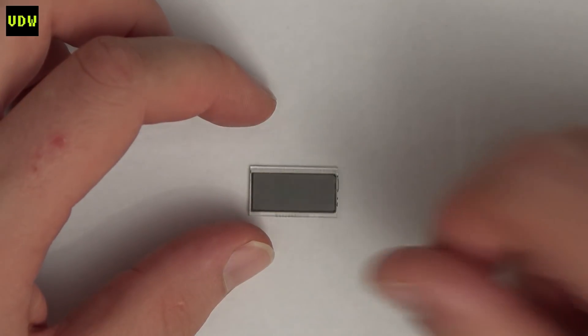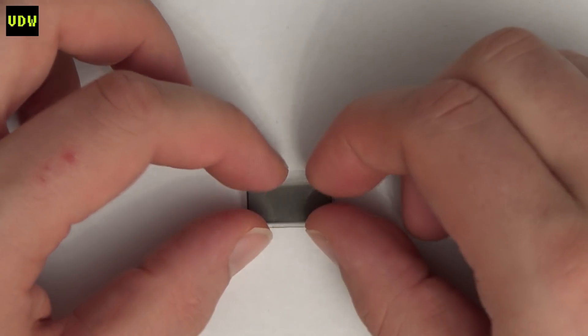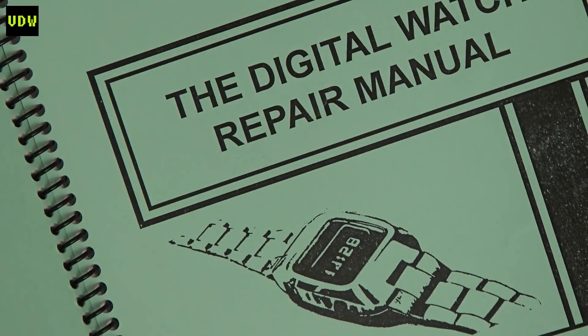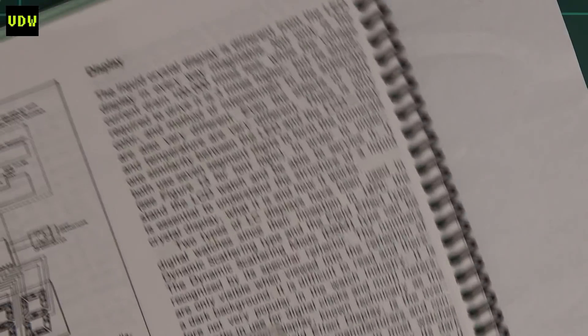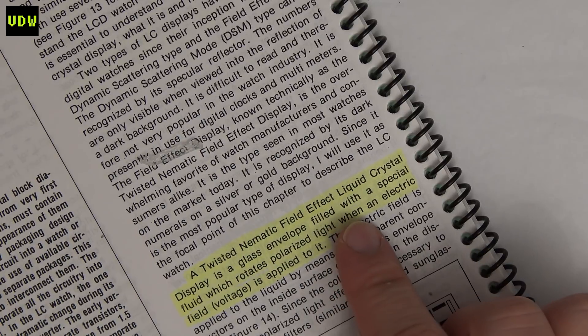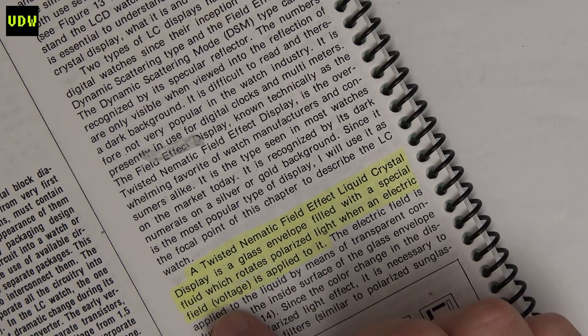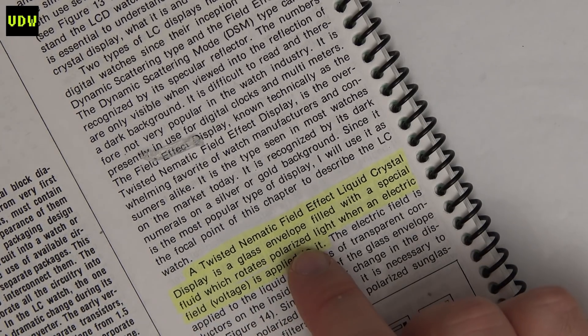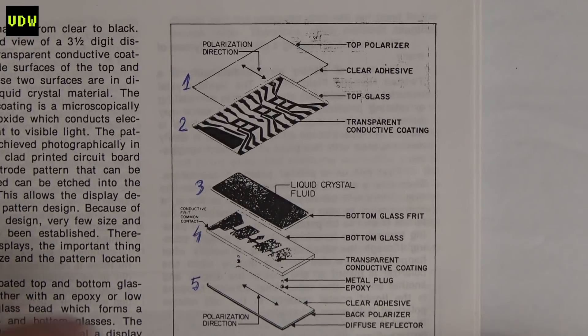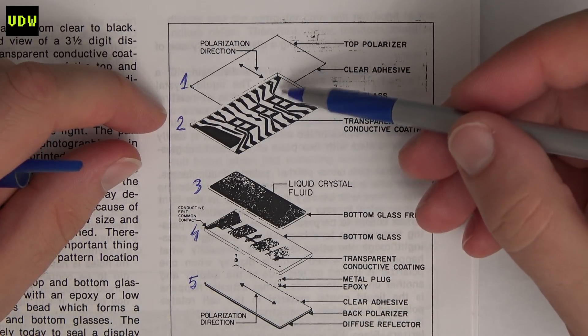In today's video we are going to see if this is worth fixing and if it's even possible to fix. But before we do that, what is an LCD actually made of? If we ask the Digital Watch Repair Manual by Louisa Noni, it says that an LCD is a glass envelope filled with a special fluid which rotates polarized light when an electric field voltage is applied to it.